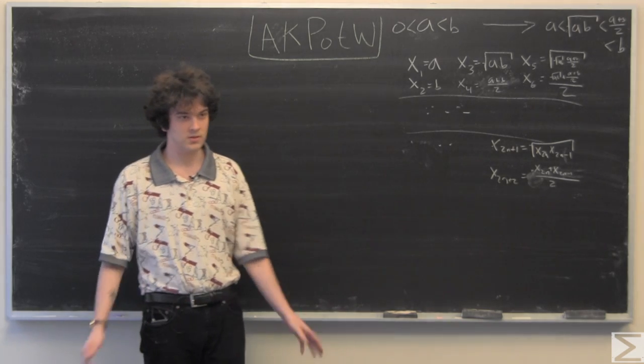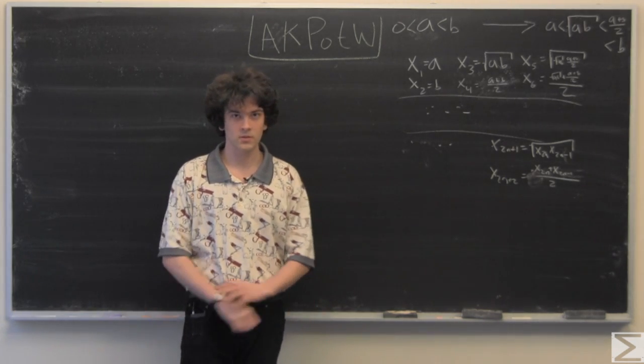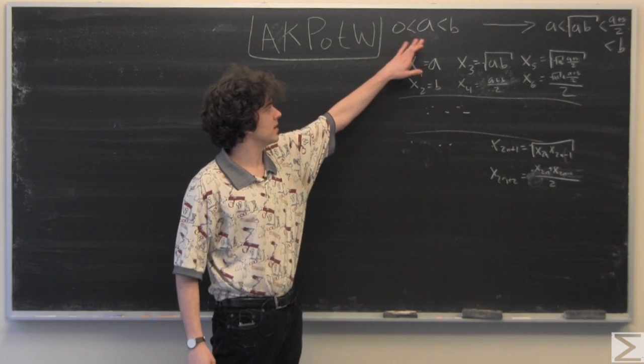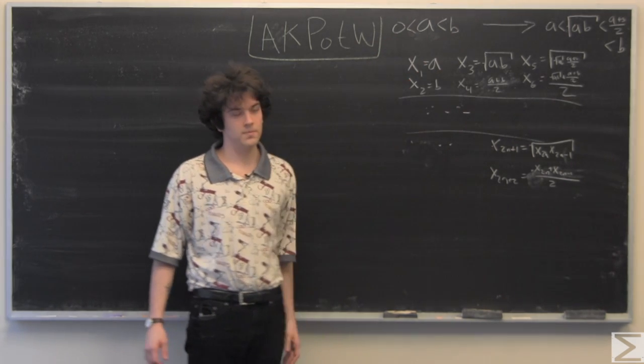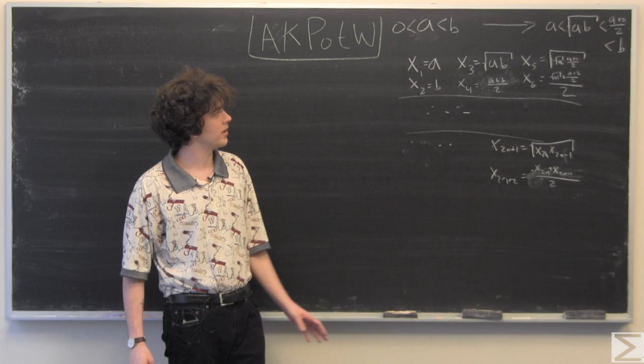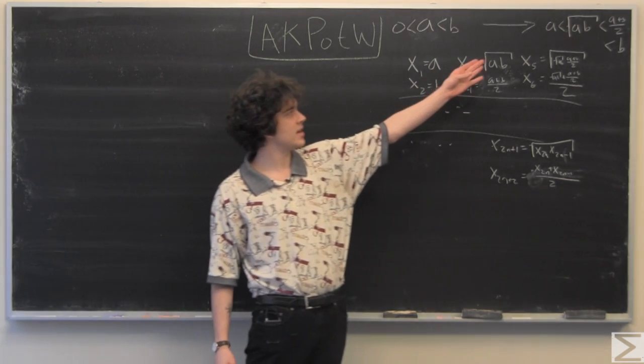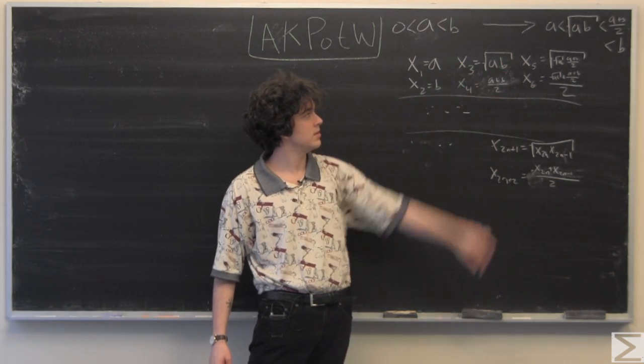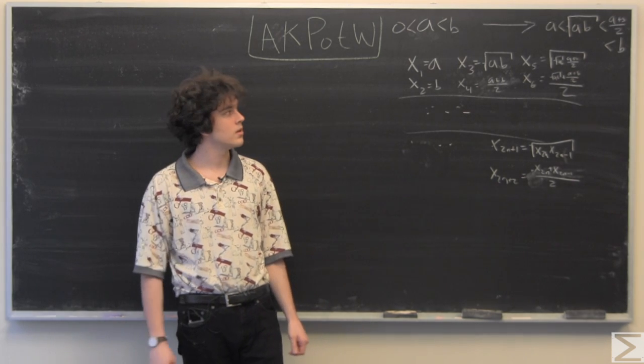A few things that are given to you in the problem: for any a less than b, which are positive and greater than 0, that implies that a is less than the square root of ab is less than a plus b over 2 is less than b.